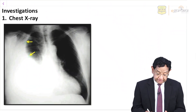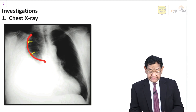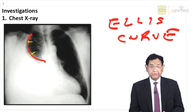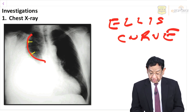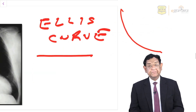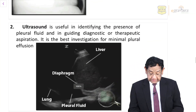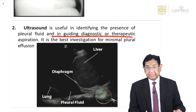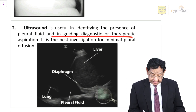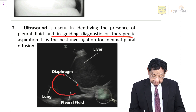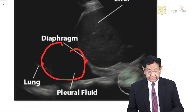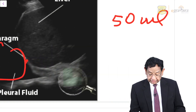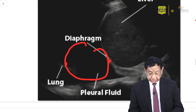For investigation, chest X-ray is much better. Classically, we get a curve on X-ray — this is called the Ellis curve. You remember when I showed a photo of hydropneumothorax where we got a straight line — here we are getting a curve. Ultrasound is a very good investigation for detecting pleural fluid and also for guiding tapping of the pleural fluid. You can see the diaphragm, the lung, and the pleural fluid. Ultrasound can detect even 50 ml of pleural effusion.